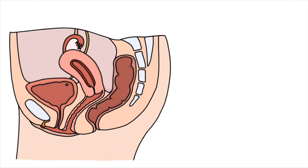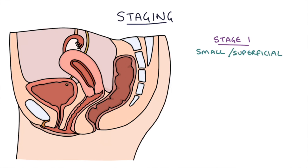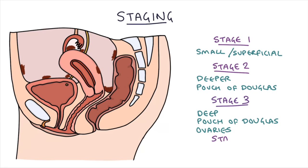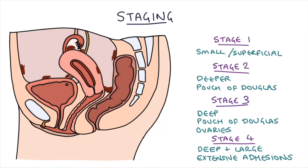There is a staging system for endometriosis. Stage one is where you only have very small superficial lesions of endometrial tissue outside the uterus. Stage two is where you have deeper lesions, which include inside the pouch of Douglas. Stage three is where you have deep lesions in the pouch of Douglas but also with lesions on the ovary itself. Stage four is the most severe, with deep and large lesions affecting the pouch of Douglas and the ovaries, plus extensive adhesions throughout the pelvis.